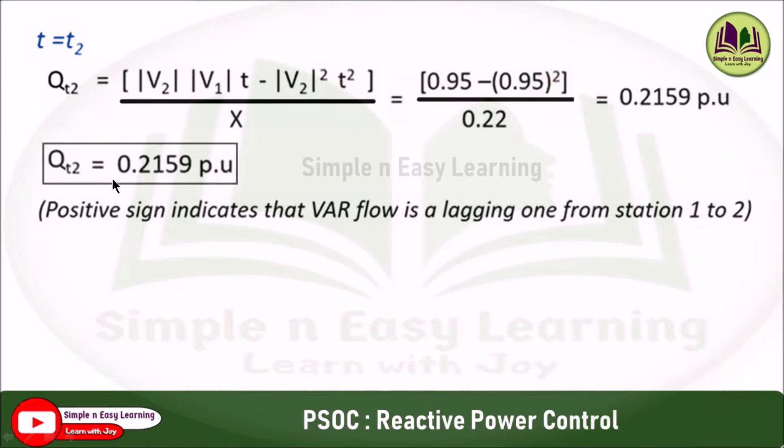Here the positive sign indicates that the reactive power flow is a lagging one from substation 1 to substation 2.